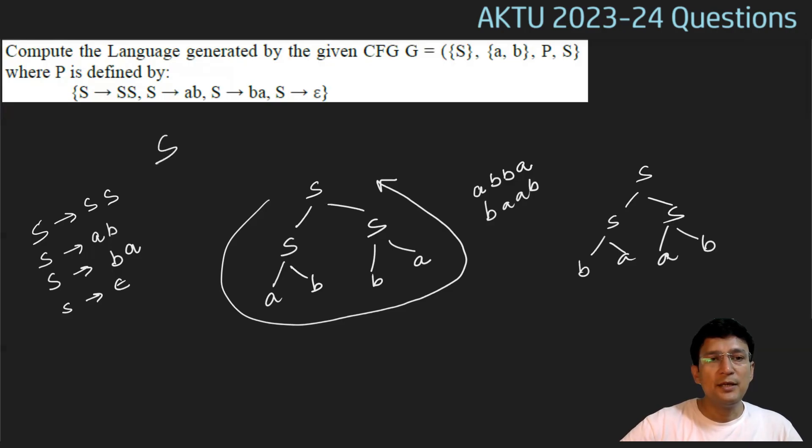One more derivation: S produces SS. In this we can say that S produces epsilon, because S can generate epsilon. Then, the second S can also generate AB or BA. So, this kind of means the string generated is AB. If we see the derivation S produces SS, and we generate epsilon from both S's, then the string generated will be epsilon.